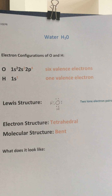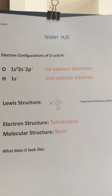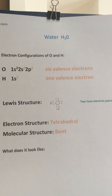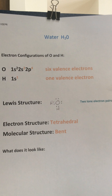Whereas methane had the octet rule satisfied — it had 4 bonds around it, no lone pairs. Ammonia, NH₃, octet rule was satisfied — it had 3 hydrogens bonded to it and 1 lone pair. Now water, the octet rule is satisfied, but you have 2 hydrogens bonded to it and 2 lone pairs right there.